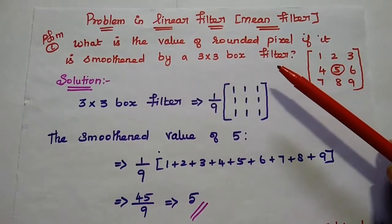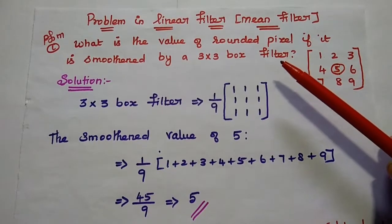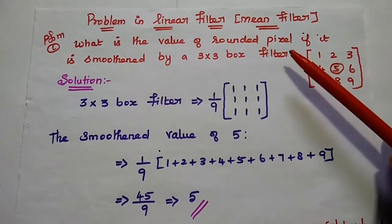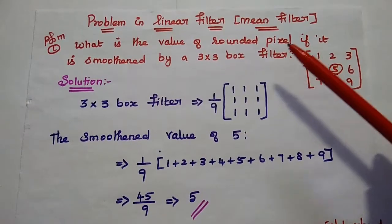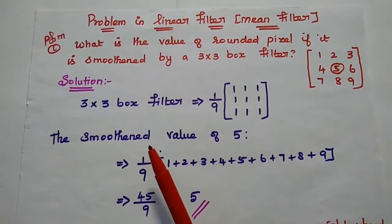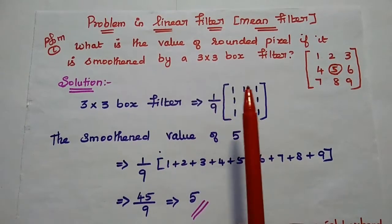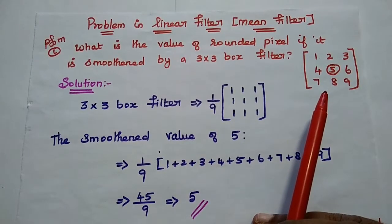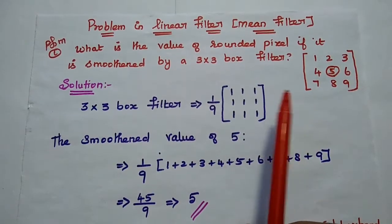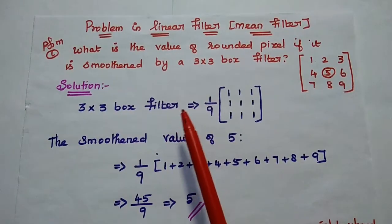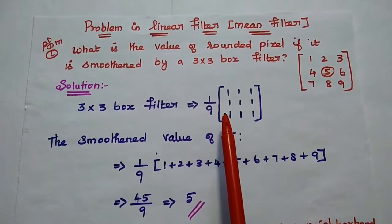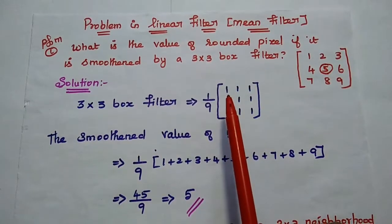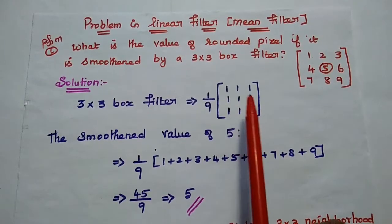Dear students, now we are going to solve problems in linear filter concept. Here we can consider mean filter, that is also known as average filter or low pass filter. So first problem: what is the value of the rounded pixel in the given image data if it is smoothened by a 3 by 3 box filter? For that we are going to take the mean filtering or average filtering concept. A 3 by 3 box filter means a 3 by 3 matrix with all 1s.